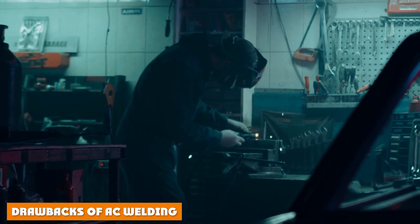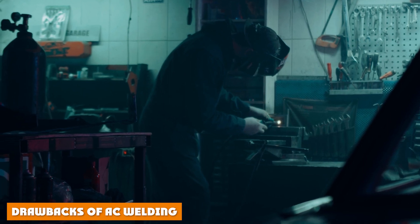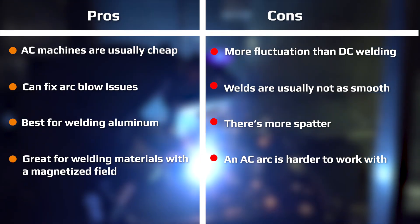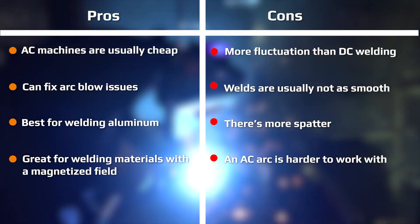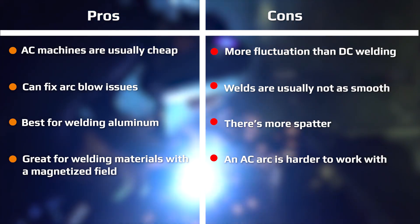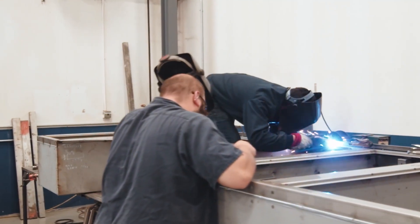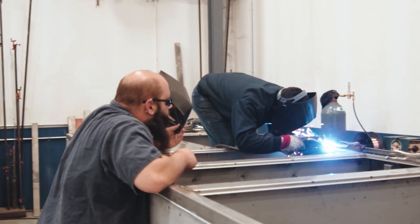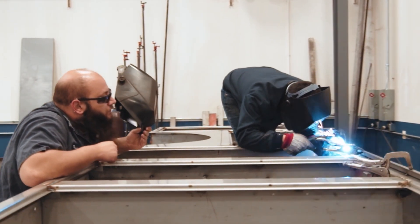Even though AC welding has some advantages, there are many reasons why it's not the go-to option for most scenarios. The main issue with AC welding is the continuous alternating of the direction of current. When the current changes direction, there is a brief moment when there is no amperage. This creates far more fluctuation in the arc of an AC welder, which is why DC welding tends to be easier and allows for cleaner welds. Additionally, AC welding produces more spatter, which makes it a poor choice for welding vertically or overhead.